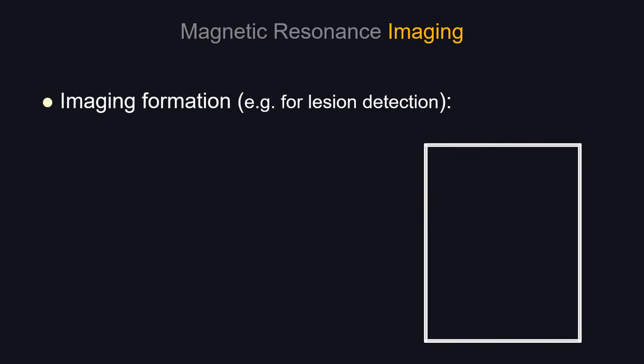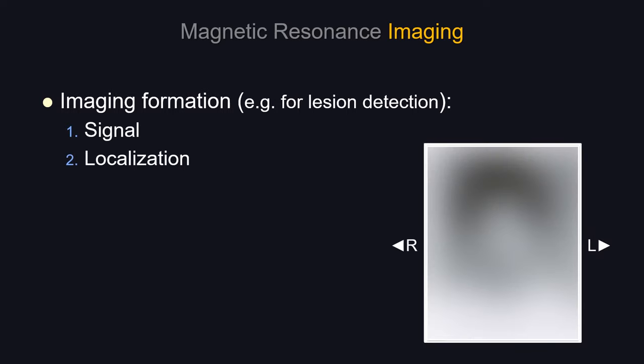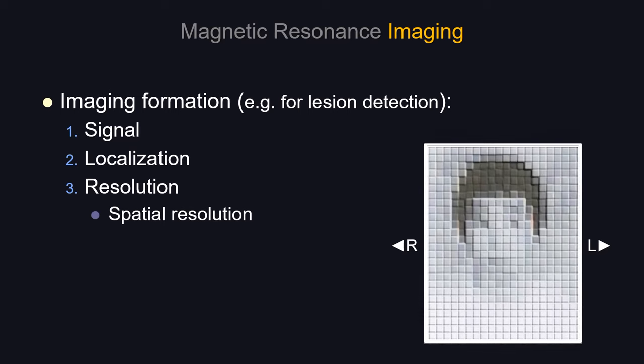When you look at image formation for the purpose of detecting a small lesion, there are multiple steps you have to go through first. First of all, you need to have a signal. Having signal itself is not very useful if you don't know where the signal is coming from — is it coming from the patient's left or right? Then you need different types of resolution. The first is good spatial resolution; otherwise the image will look very blurry or pixelated, and there's no hope of detecting a small lesion.